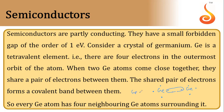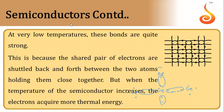Similarly, if another germanium atom is present, it will form a covalent bond with the neighboring atom. Each germanium atom will be surrounded by four neighboring germanium atoms. At low temperature, these bonds are very strong because the shared pair of electrons are shuttled back and forth between the two atoms, holding them close together.